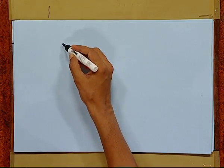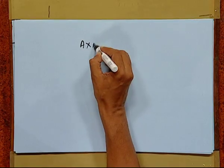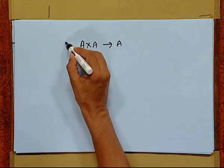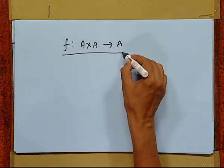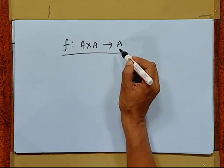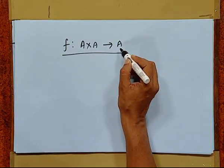What is a binary operation? A binary operation is just a function from the set A cross A to A. So, it is merely a function whose domain is A cross A and codomain is A.